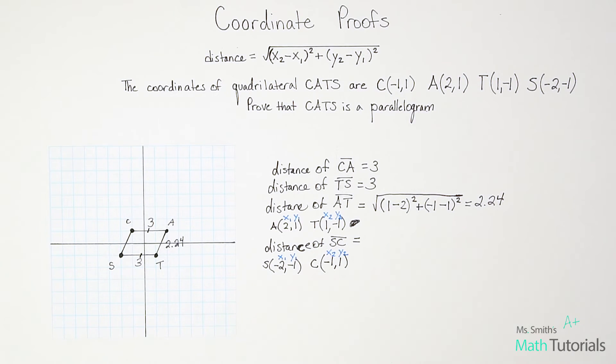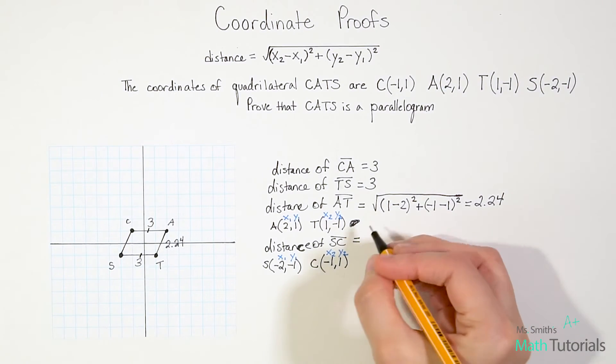You could totally do it the opposite way and make this your second point and that your first point. It does not matter as long as you're consistent. Meaning your sub number 1 needs to be together and your sub number 2 needs to be together. Other than that, you can totally flip-flop and get the same answer.